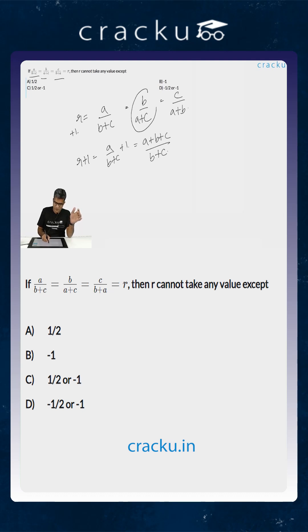Similarly, if you are adding 1 to b by a plus c, that will become equal to a plus b plus c divided by a plus c, which becomes equal to, if you are adding 1 to c by a plus b, this becomes a plus b plus c divided by a plus b.